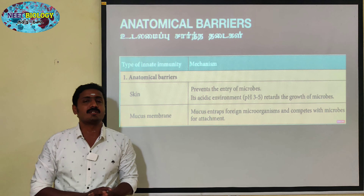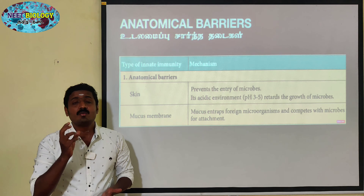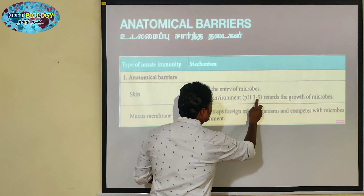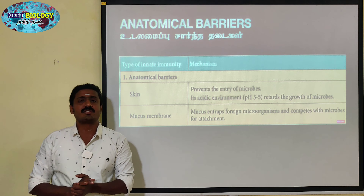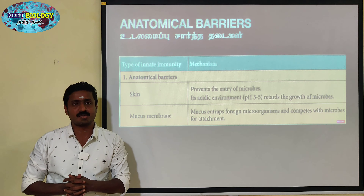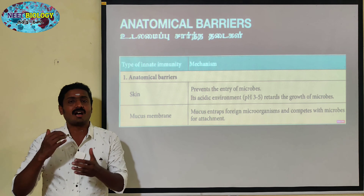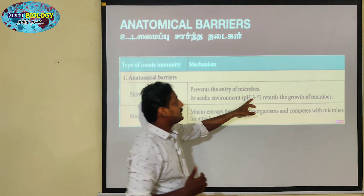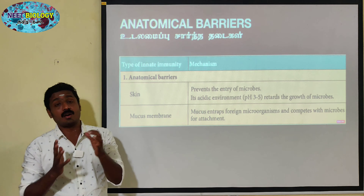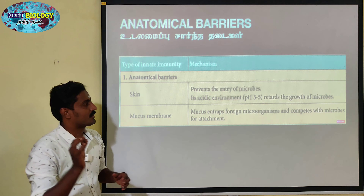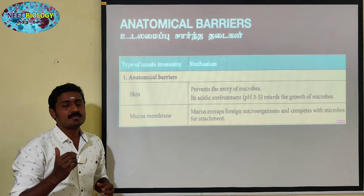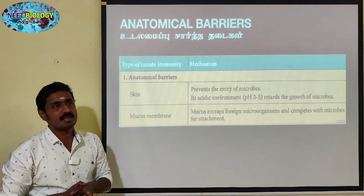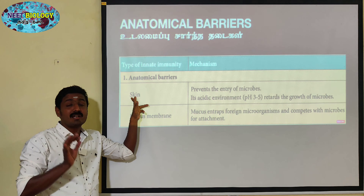From the inside of the skin, it is called an acidic environment. The skin's pH is 3 to 5. Compared to neutral pH, the hydrogen ion concentration is higher. Other microbes are exposed to this pH, so nutrients and microbes cannot survive well.